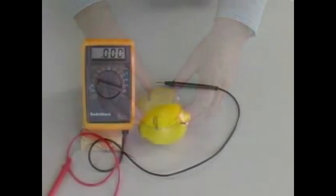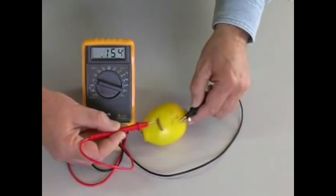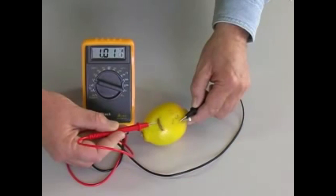The voltmeter confirms that our two metals, zinc and copper, suspended in the lemon citric acid, create a measurable voltage. In this case, just over one volt.